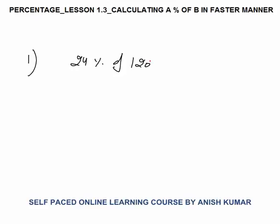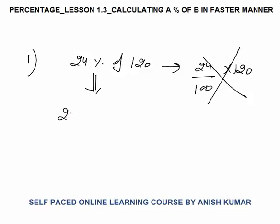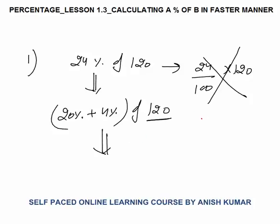Now the first example: calculate 24 percent of 180. Traditionally we used to do 24 by 100 into 120 and then cancel, but this is not the right way to solve this question. In aptitude exams you have to solve questions in a faster manner with logic. So what we will do, we will break this as 20 percent plus 4 percent of 120. Now we have to do this verbally. 10 percent of 120 is 12.